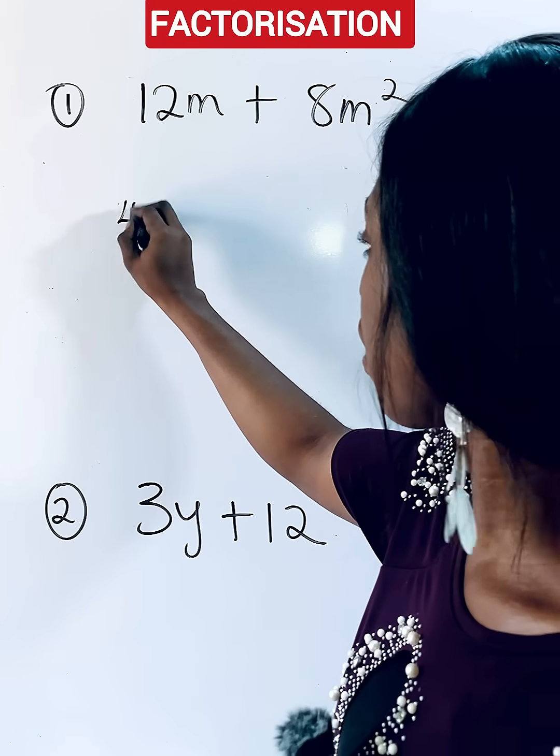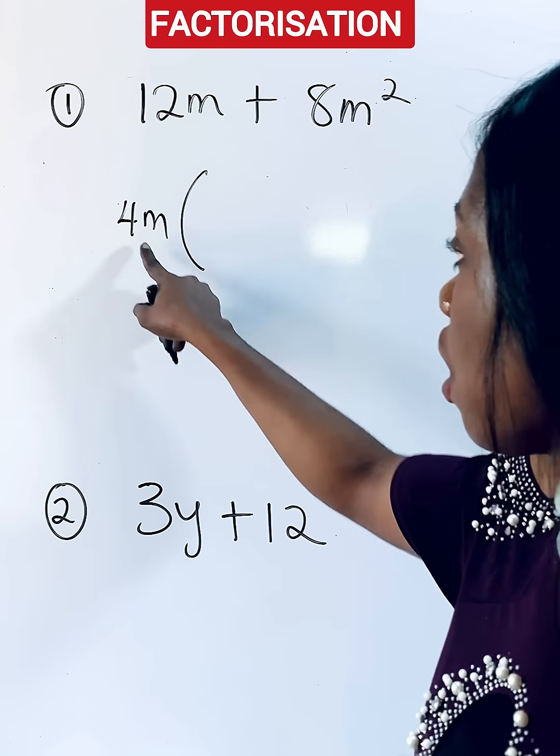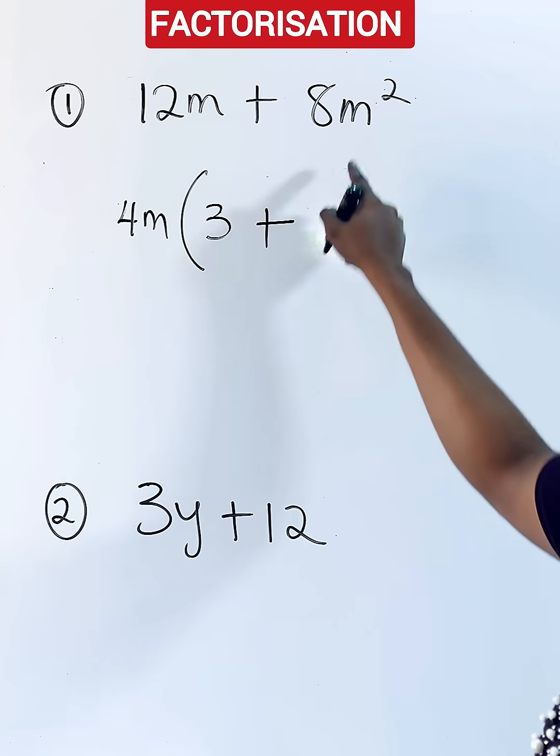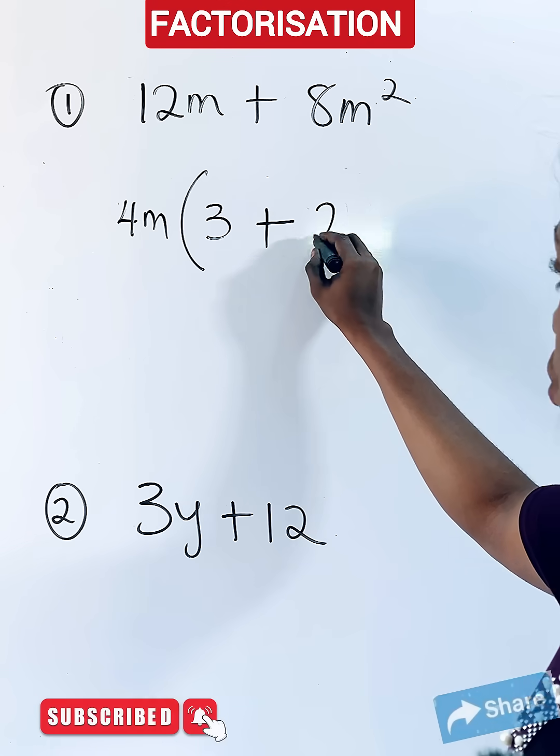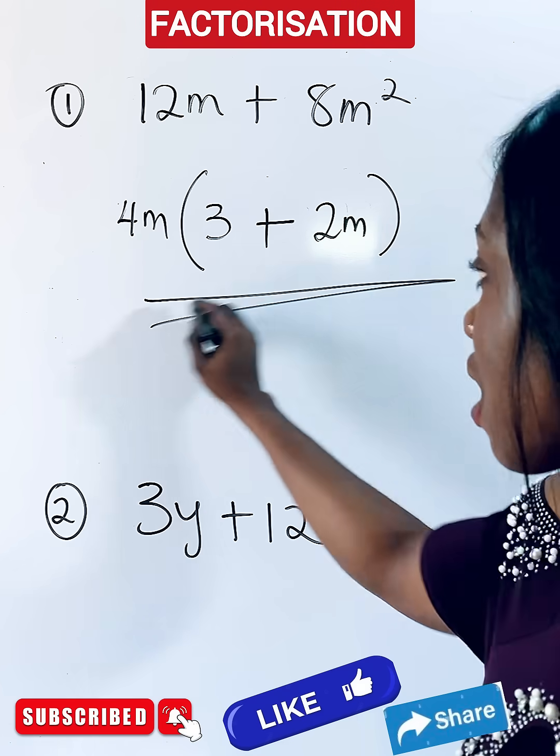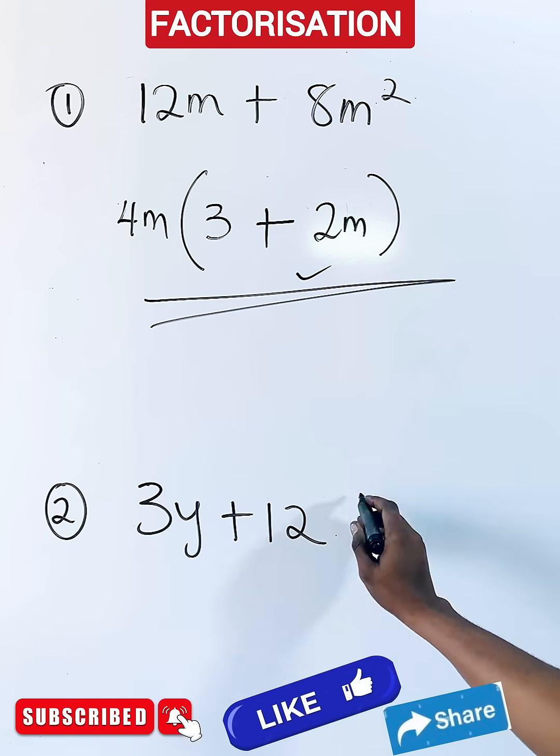Bring that 4m out, open a bracket, use it to divide this. It gives you 3, plus use it to divide this. It gives you 2m. I hope you are with me. Now this becomes the answer you get for factorizing. What do you think about it?